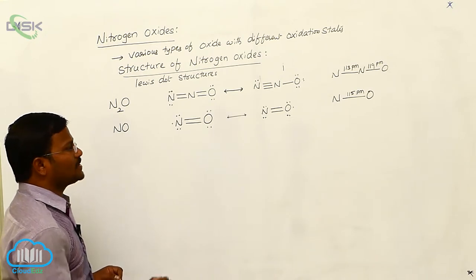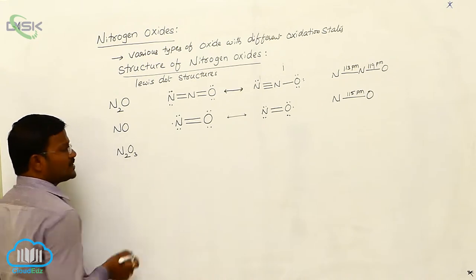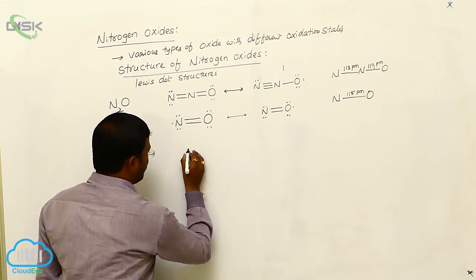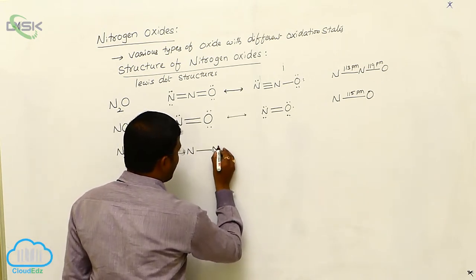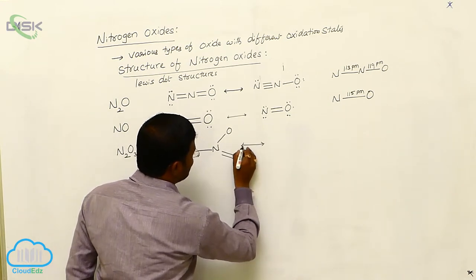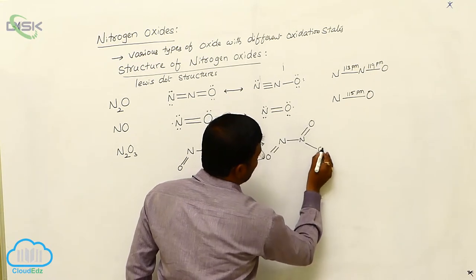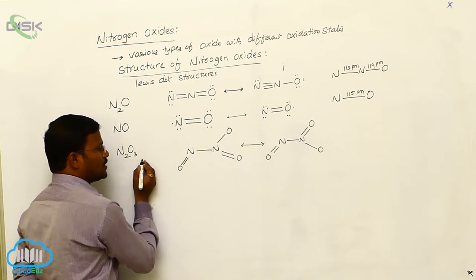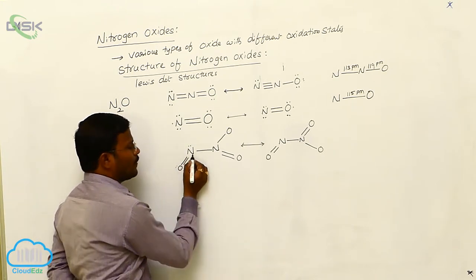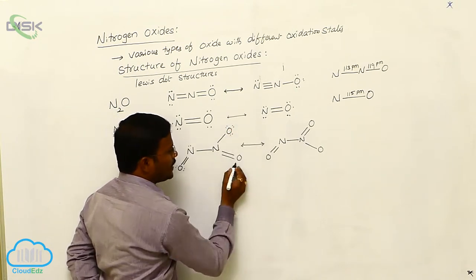In nitric oxide, the bond length between nitrogen and oxygen is 115 picometers. The next oxide is N₂O₃. Its name is dinitrogen trioxide, or nitrogen 3 oxide. Dinitrogen trioxide has the geometry N double bond O–N double bond O with a single bond O. In the first resonance structure, the oxygen atoms show two non-bonding pairs, one non-bonding pair on nitrogen, no non-bonding pair on the central nitrogen, three non-bonding pairs on the terminal oxygen, and two non-bonding pairs on the other oxygen.